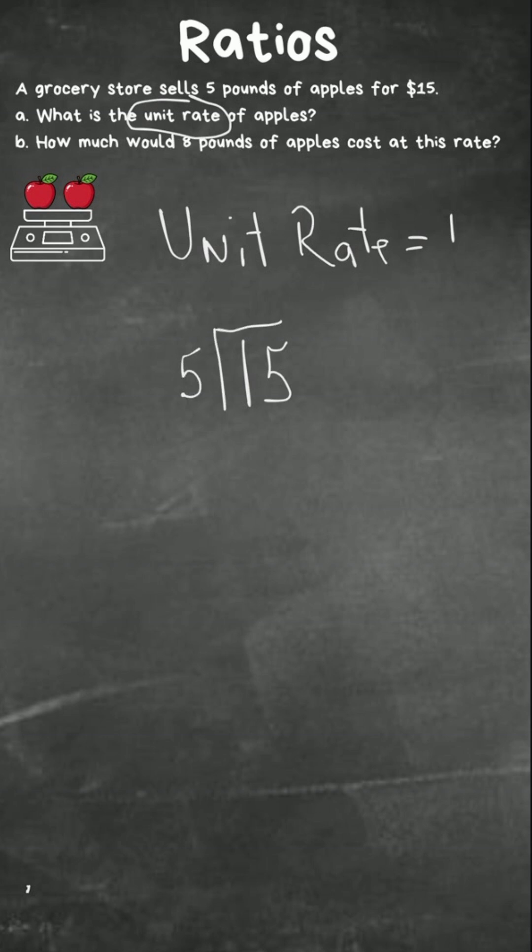So let's just divide 15 by 5. Five times three is 15. So the unit rate would be $3 per pound.